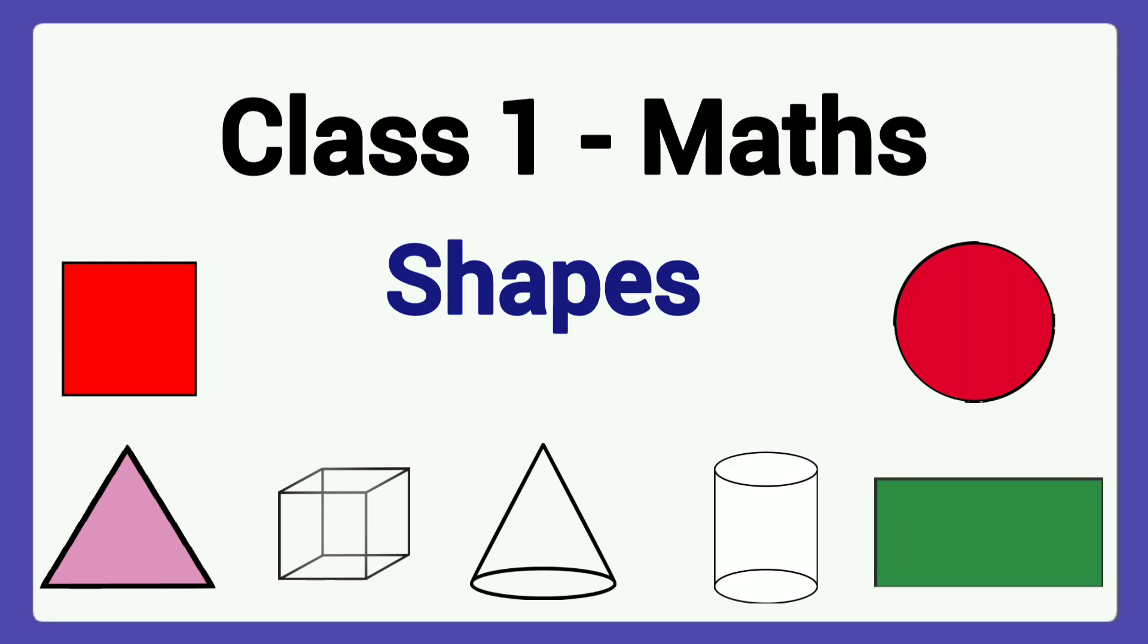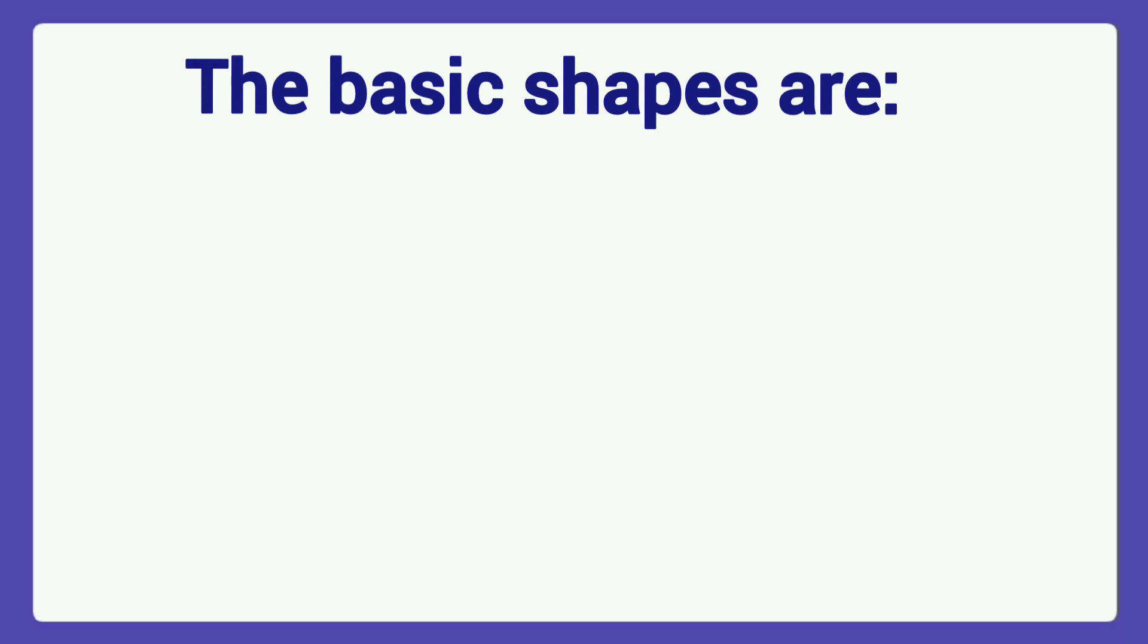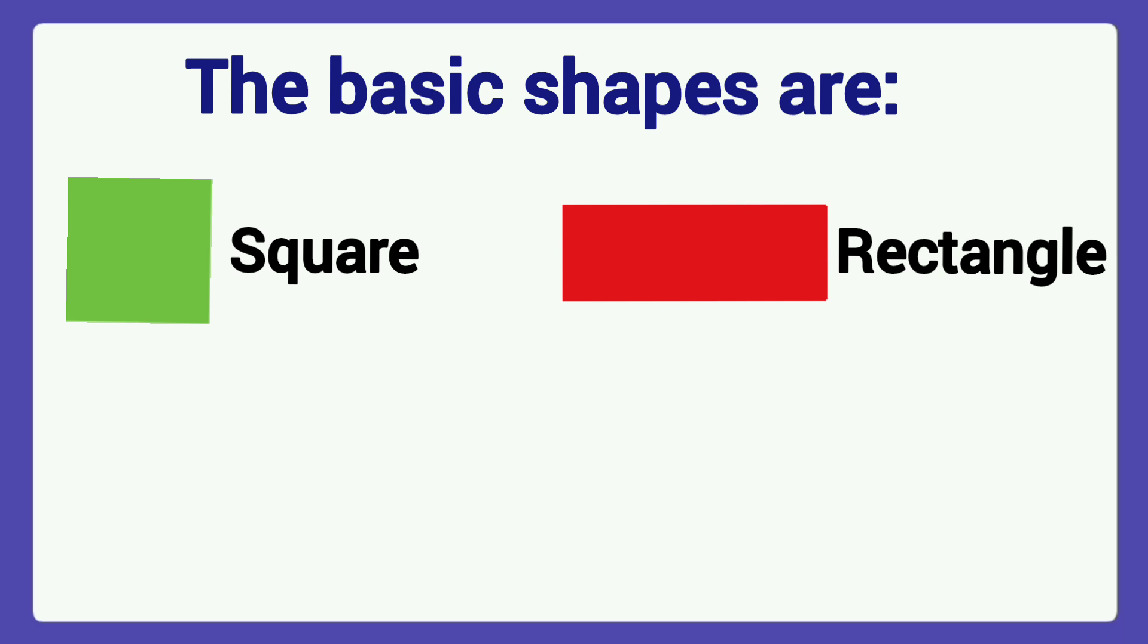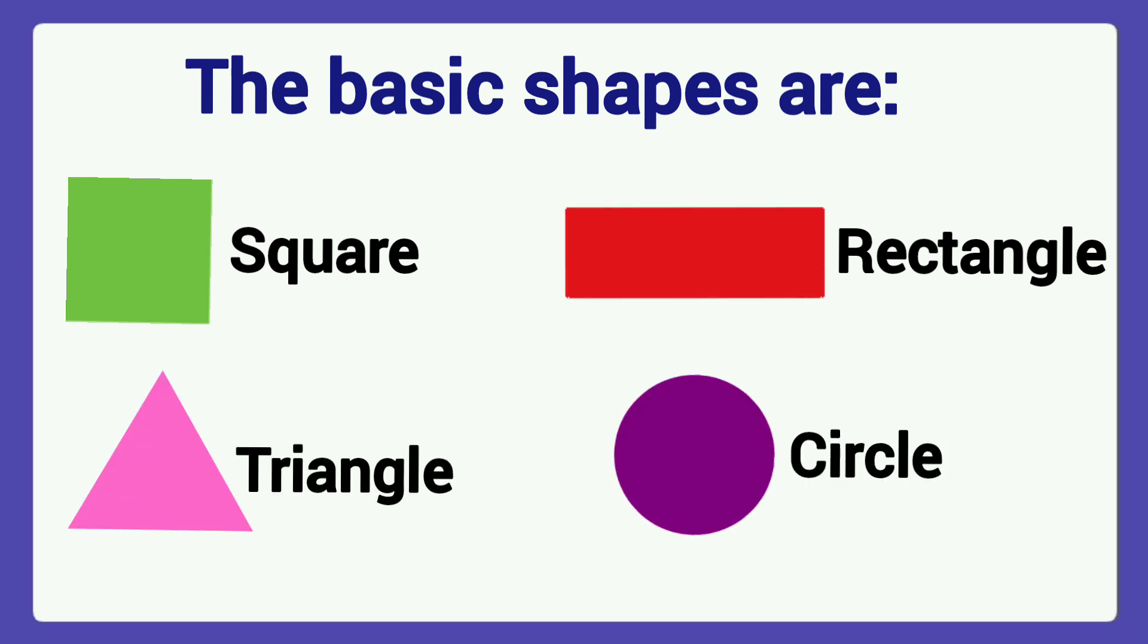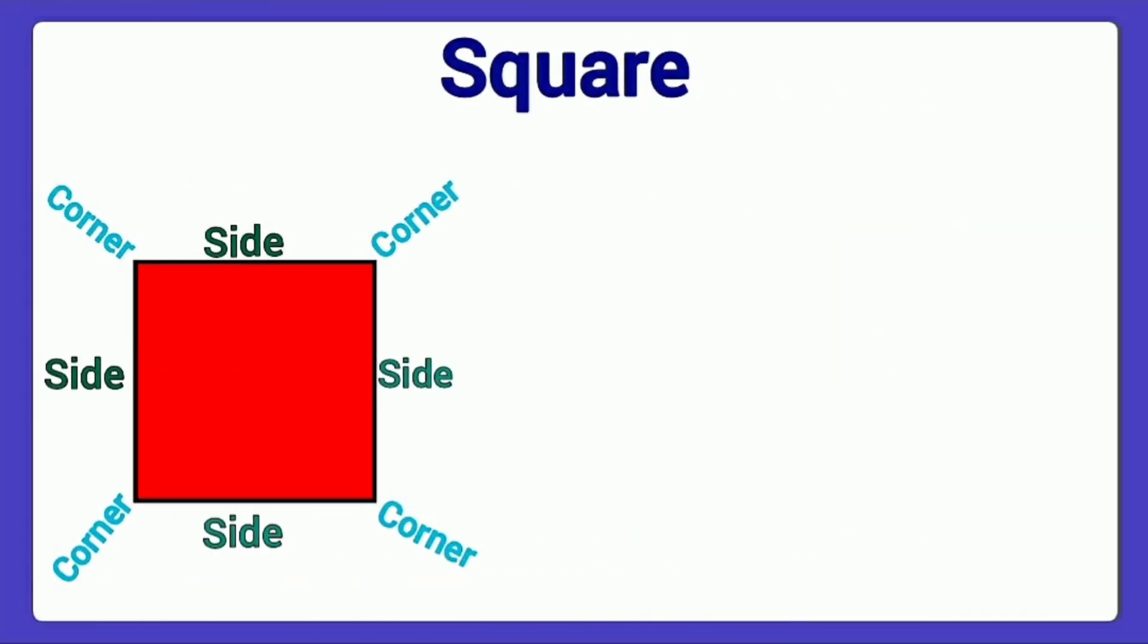Today we will learn about shapes. There are four basic shapes: square, rectangle, triangle, and circle. These are plane shapes. Here first we learn about square.